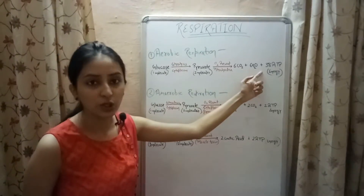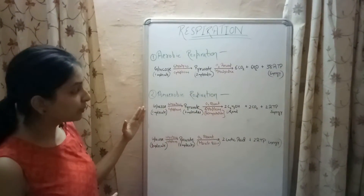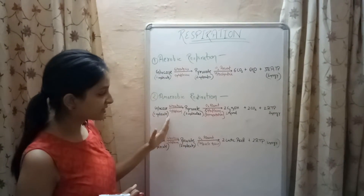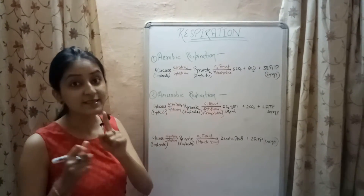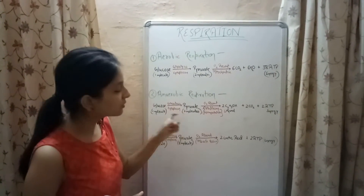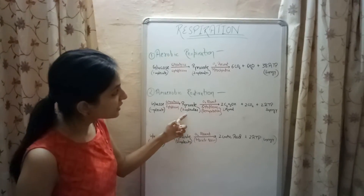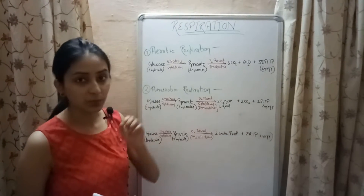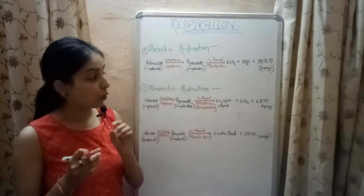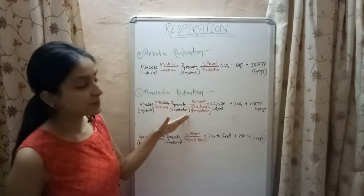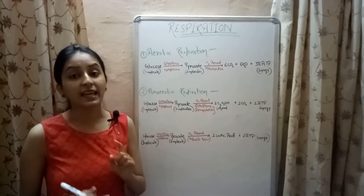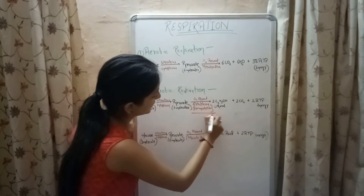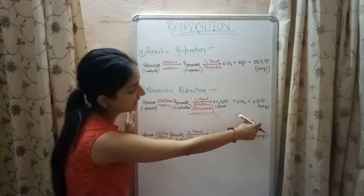In anaerobic respiration, oxygen is absent. The glucose is first broken down to pyruvate in the cytoplasm by glycolysis, but since oxygen is absent, only partial breakdown of pyruvate takes place. Instead of 38 molecules of ATP, only two molecules of ATP are produced, along with two molecules of ethanol and carbon dioxide. This anaerobic respiration takes place in simple microorganisms like yeast and bacteria by the process called fermentation.